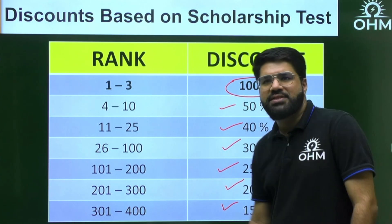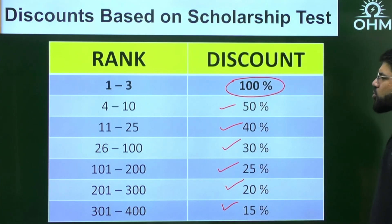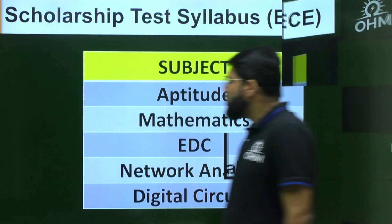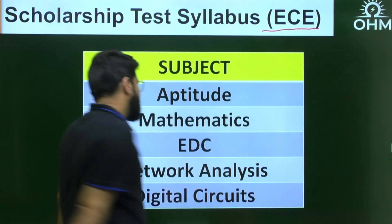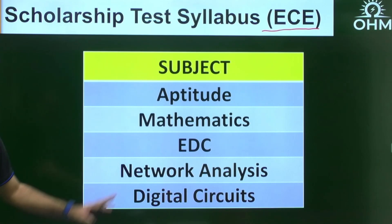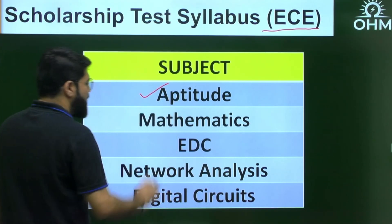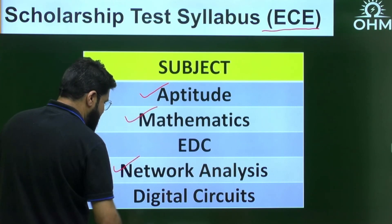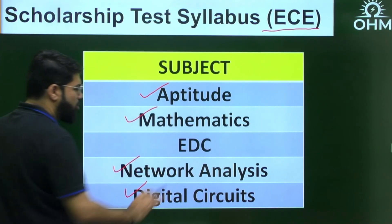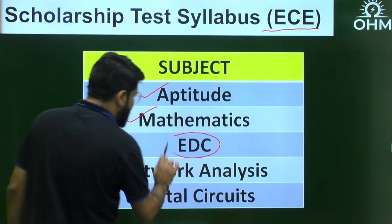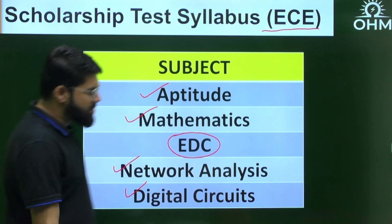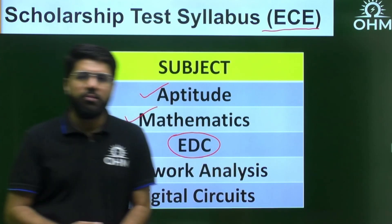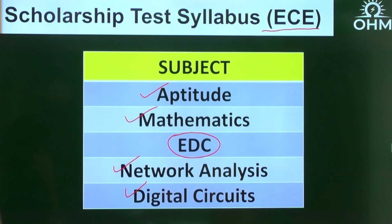Now for the syllabus. For EC branch, the subjects are: Aptitude, Mathematics, Network Analysis, Digital Circuits — these are common/foundation subjects — and for the core subject, Electronic Devices and Circuits (EDC). The 20 questions will be drawn from these five subjects.